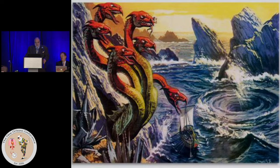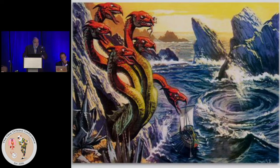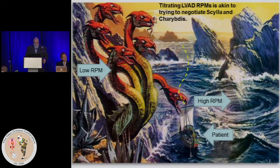This monster was reputed to snatch sailors from their boats as they were crossing through a very narrow strait — a strait that existed between Italy and Sicily. Charybdis is the whirlpool. She was one of Poseidon's daughters and was turned into a whirlpool. It was very difficult for sailors because you had Scylla and Charybdis on either side of a very narrow area. It's come to be a metaphor for very treacherous routes that have no clear path through. So how do we negotiate this route?